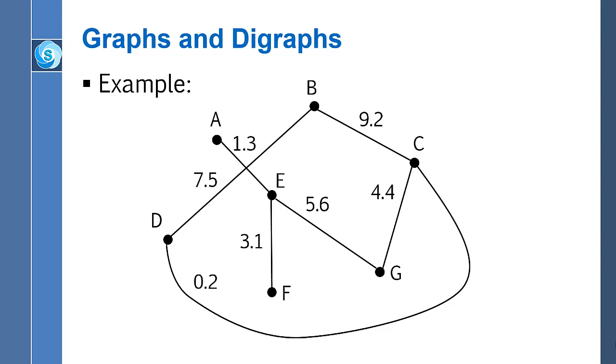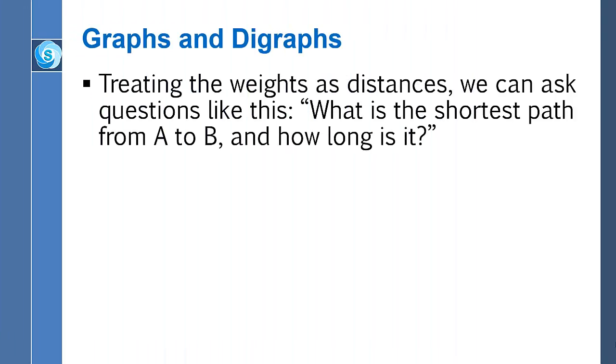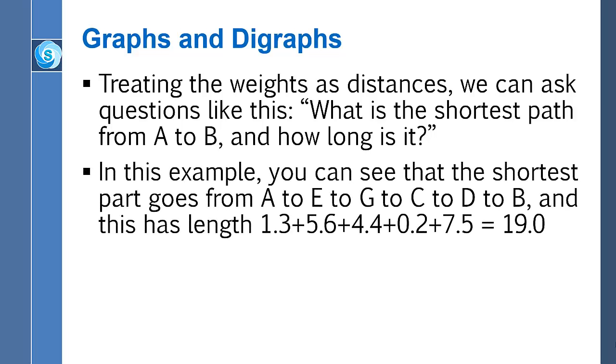So here's an example of an edge-weighted graph. The edge from A to E has weight 1.3. The edge connecting B and D has weight 7.5 and so on. If we think of these weights as distances, which might or might not be appropriate in some context, what would be the shortest path to get from A to B? Well, if you look at it carefully, you can see that you could go from A to E and the weight of that edge is 1.3.